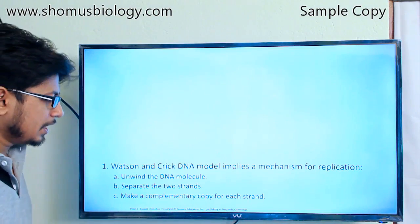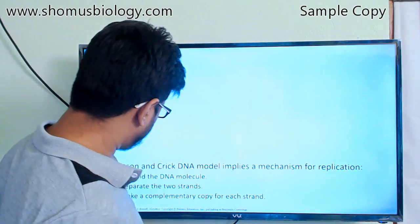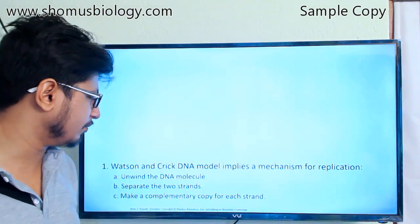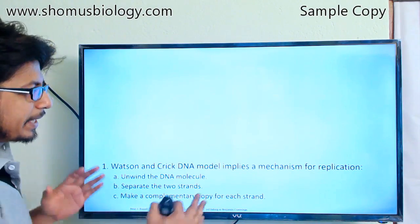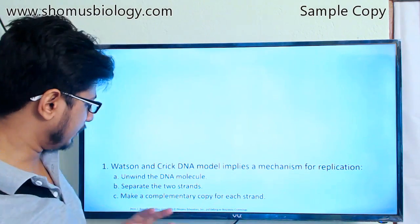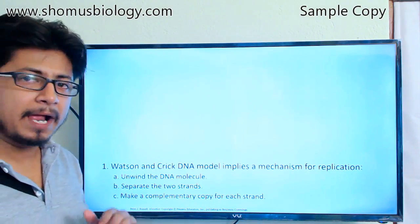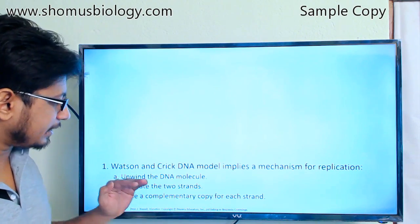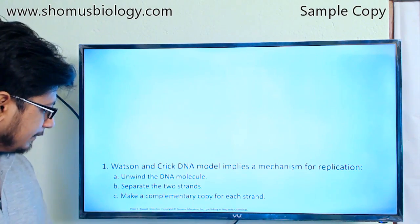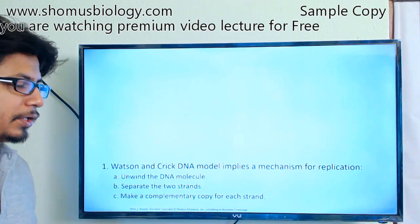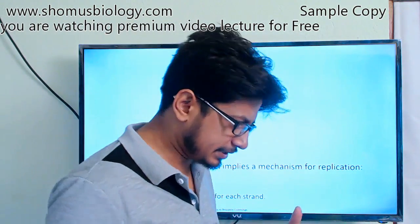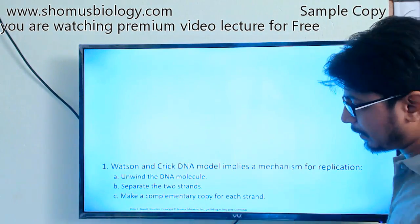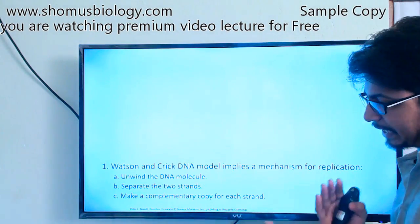So let's begin. What we intend to talk about here is how the Watson and Crick DNA molecule implies a mechanism for replication. That mechanism states three simple steps: first, unwinding the DNA molecule; second, separate the two strands from each other; and third, make a complementary copy of each strand. This is the idea provided by Watson and Crick after knowing the structure and sequence of DNA and how DNA base pairing is done.